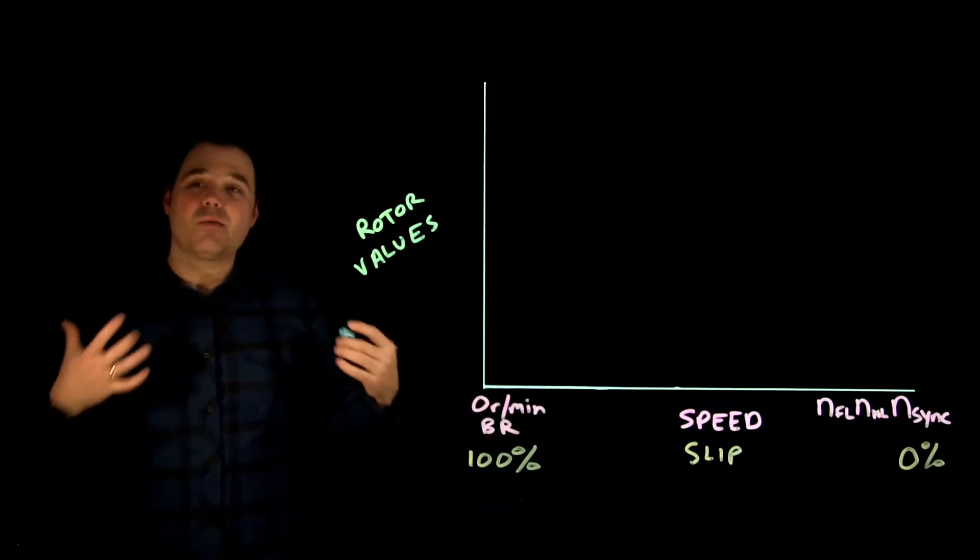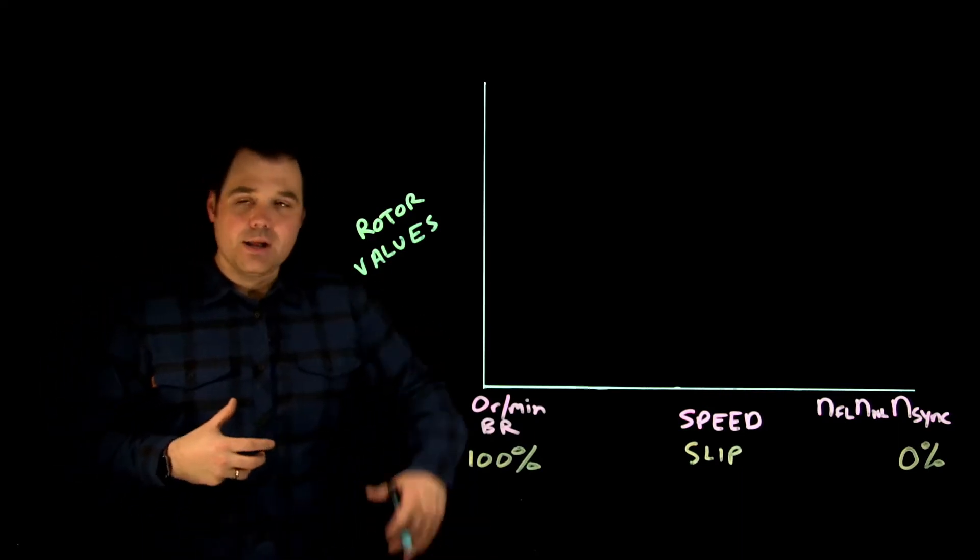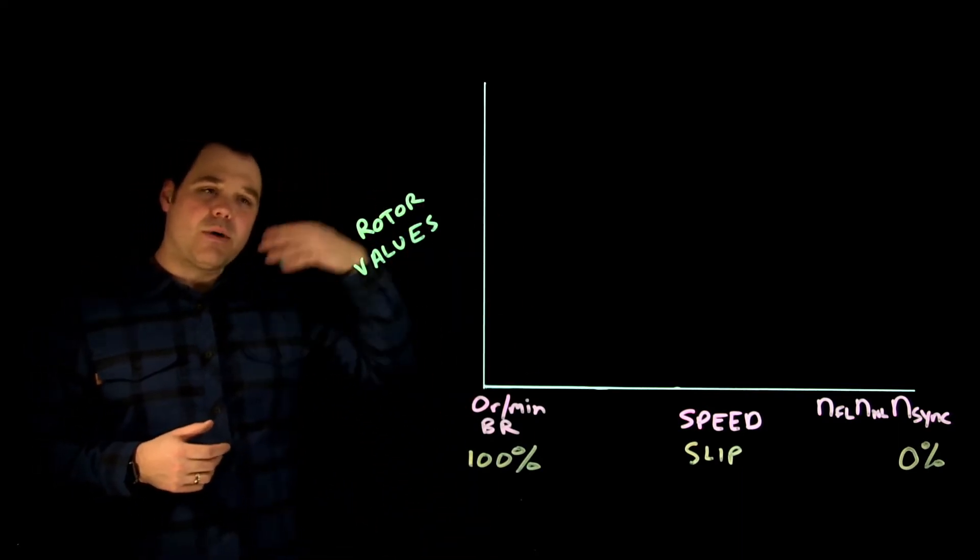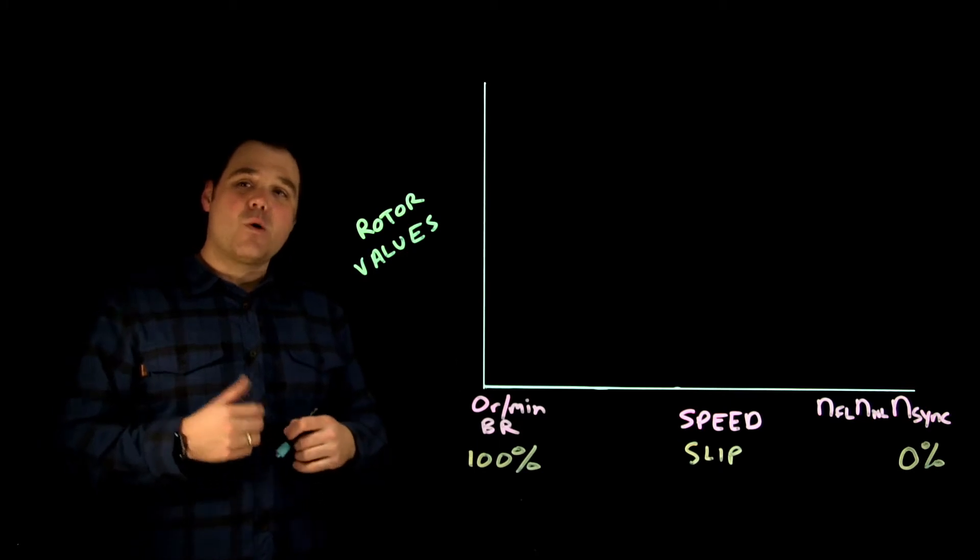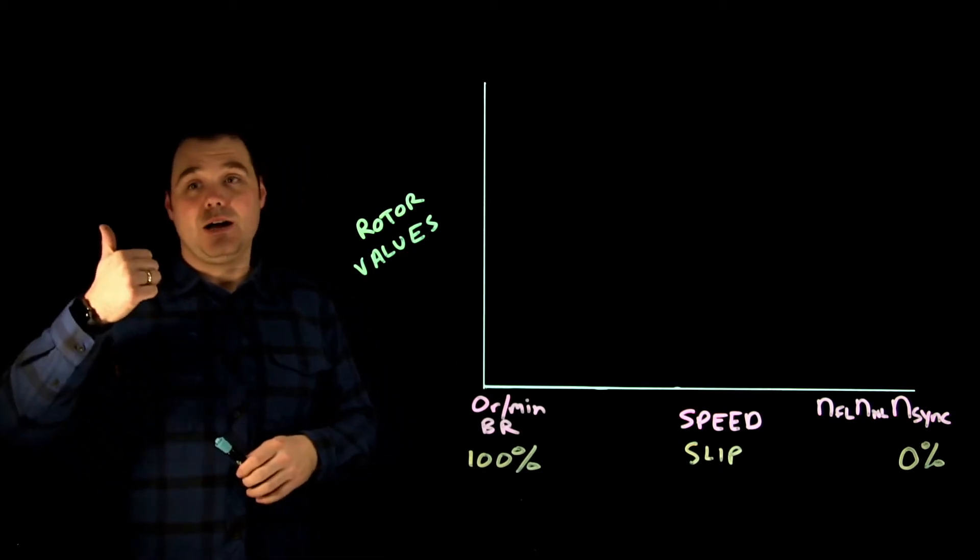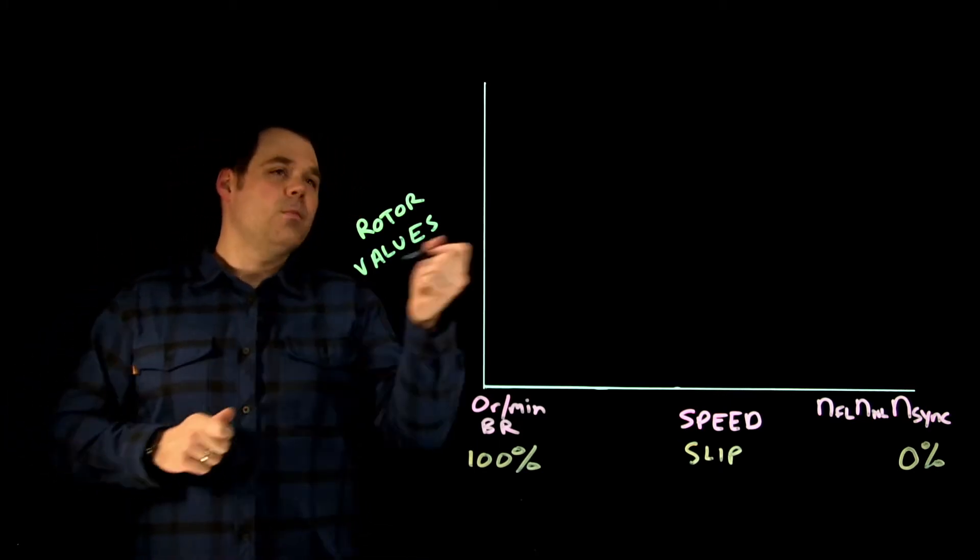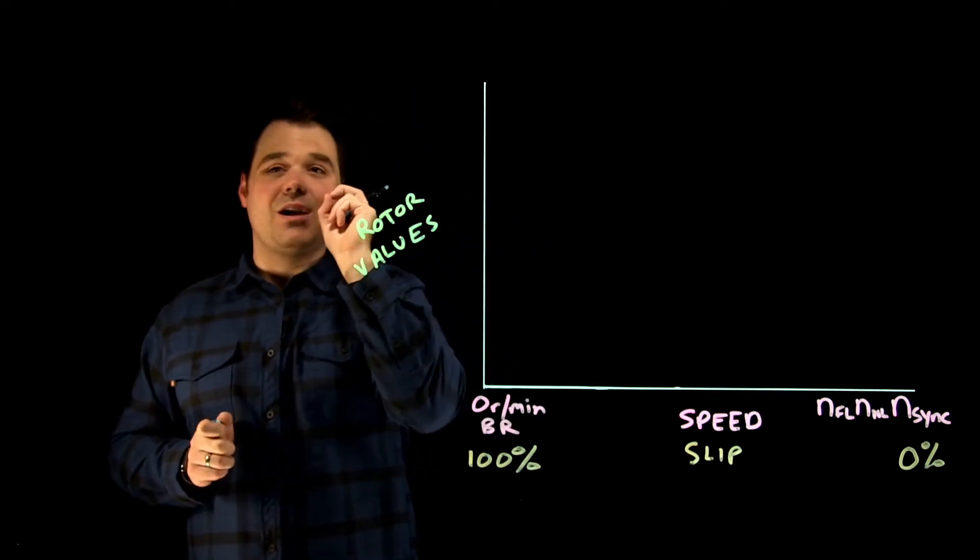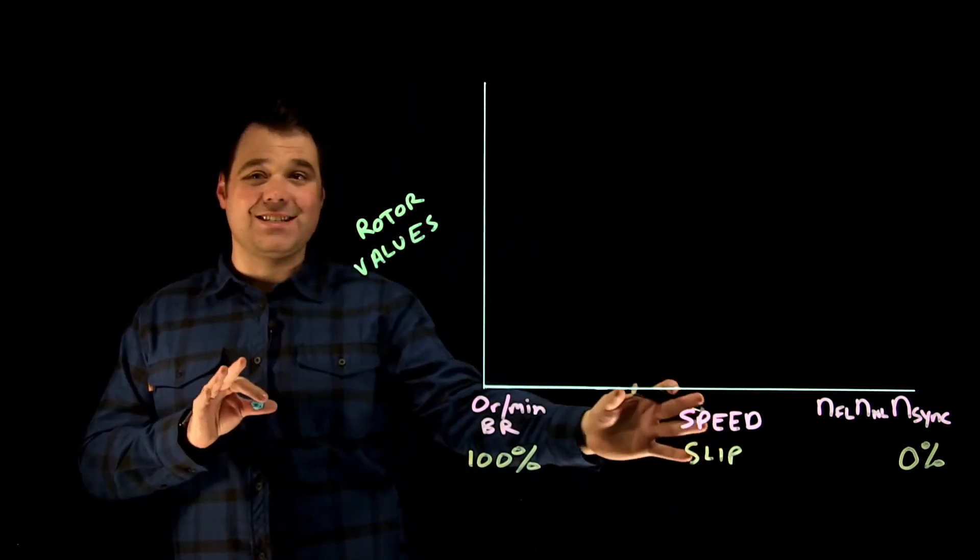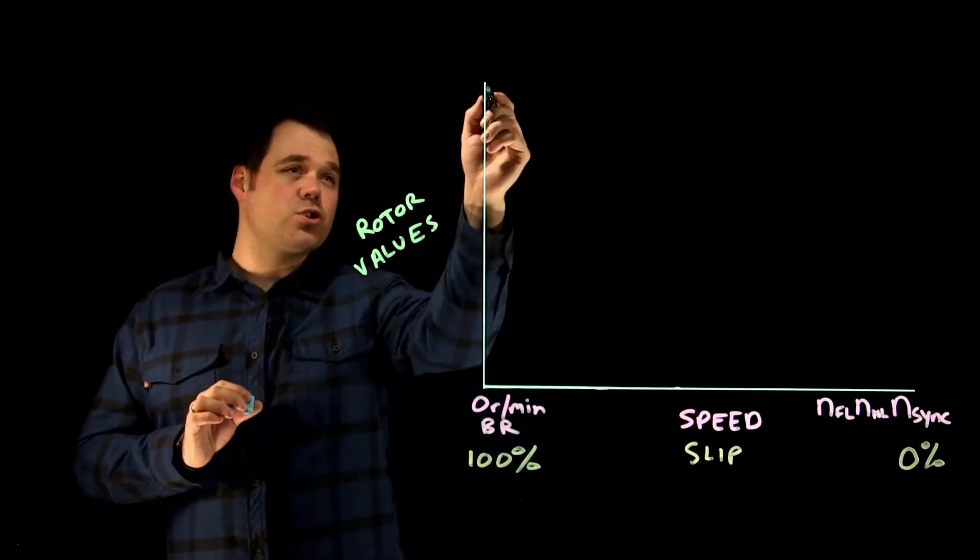Perfect. So now what I want to do is I want to talk about what's getting induced into the rotor. So my stator is spinning around my rotor. Inside my rotor, I'm going to induce a lot of things. So there's a lot of things that are, and we talked about this in proportion to slip.